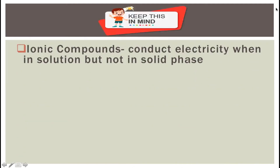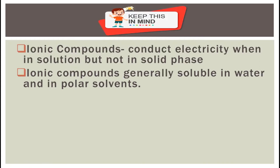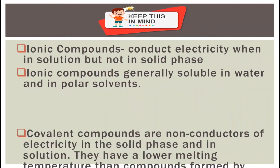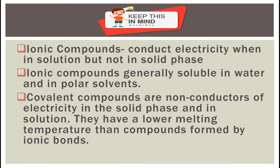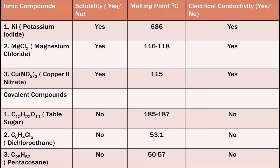Keep this in mind: ionic compounds can conduct electricity when in solution, but not in solid phase. Ionic compounds are generally soluble in water and in polar solvents. Covalent compounds are non-conductors of electricity in the solid phase and in solution. They have a lower melting temperature than compounds formed by ionic bonds.